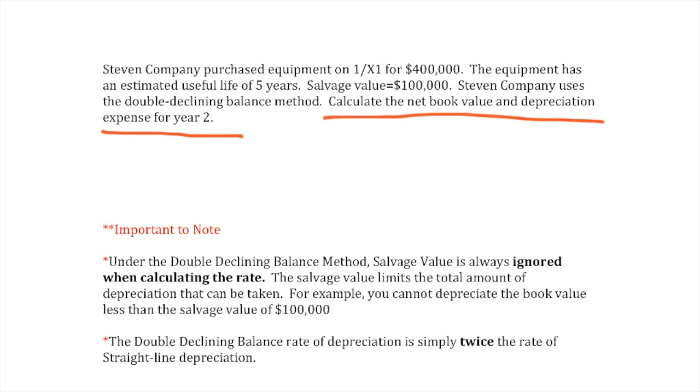It is also important to note, under the double declining balance method, salvage value is always ignored when calculating the rate. The salvage value limits the total amount of depreciation that can be taken. For example,